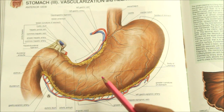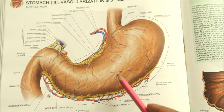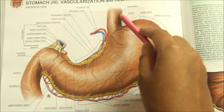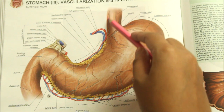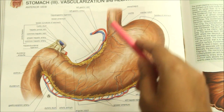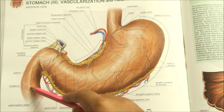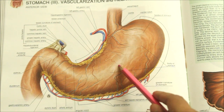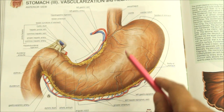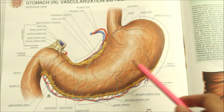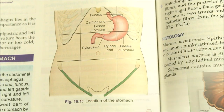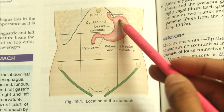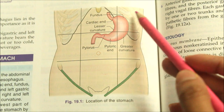It is connected above to the lower end of the esophagus and below to the duodenum. It acts as a reservoir of food and helps in digestion of carbohydrates, proteins and fats. The stomach lies obliquely in the upper and left part of the abdomen.